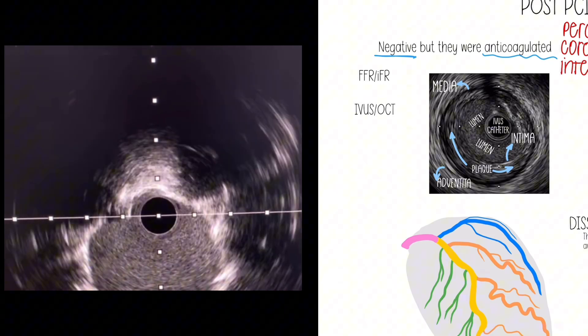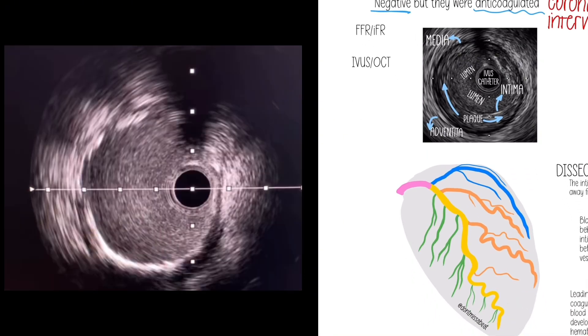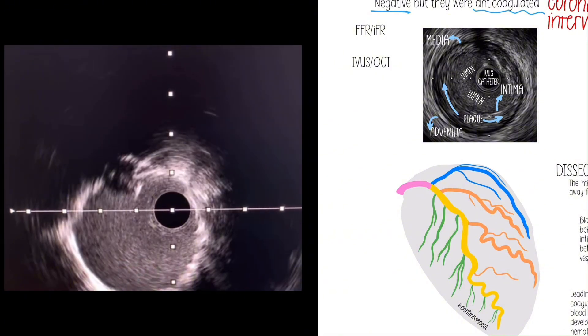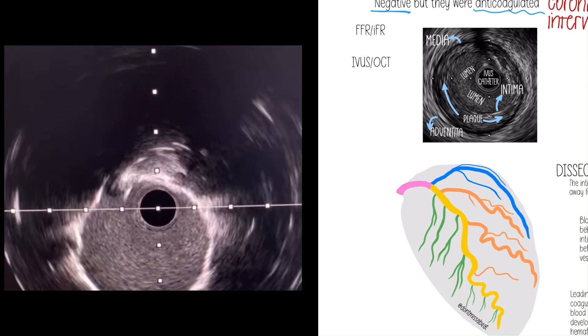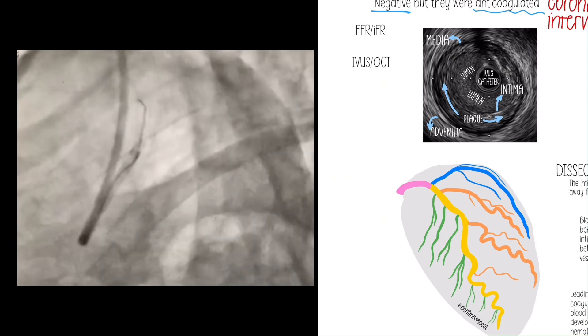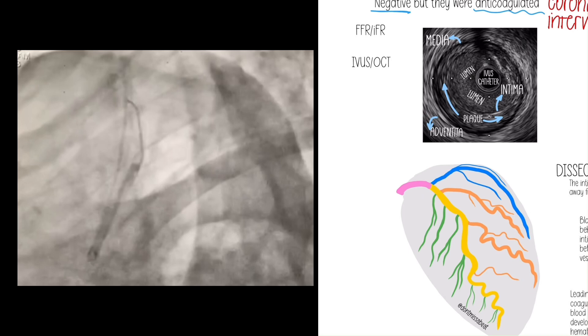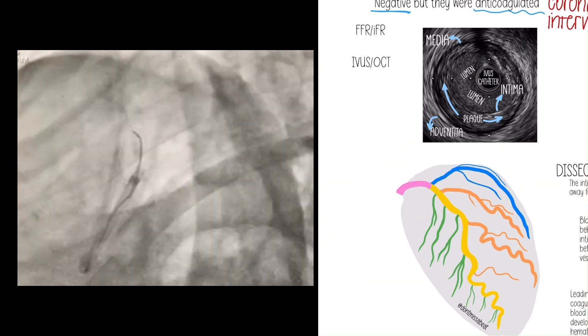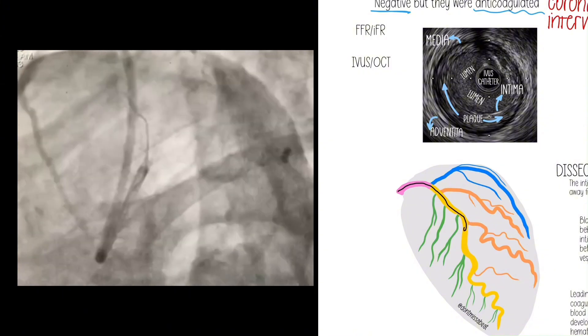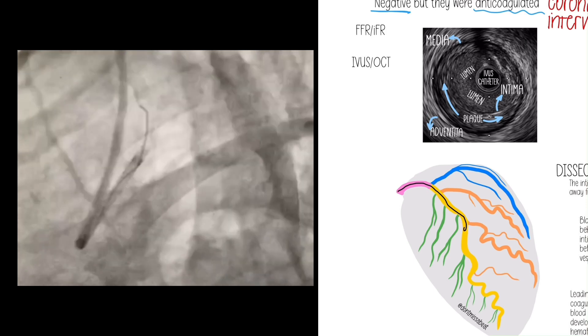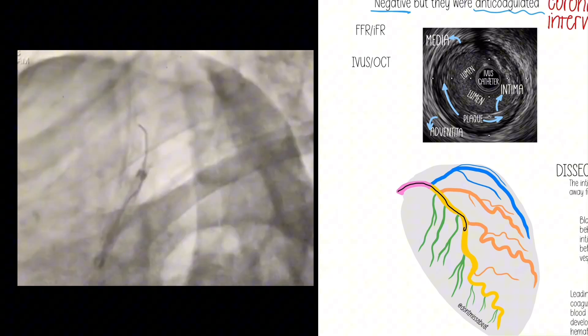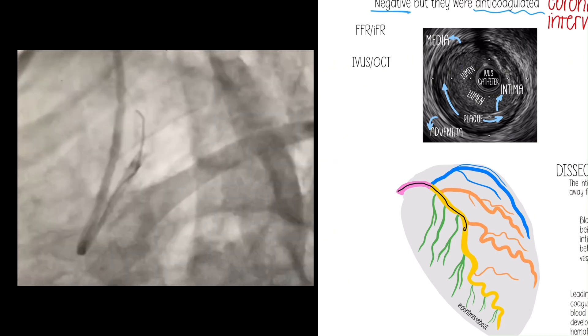There are some procedures where we anticoagulate anytime we put a wire in the coronary arteries because remember that coagulation process I talked about? The body kind of freaks out and starts aggregating platelets. Sometimes we put wires down to assess things to decide if we need to fix or not, but because we're putting a wire in the coronary artery to assess it, we have to anticoagulate. That's why your patient might have received anticoagulation. We did the assessment, decided it wasn't worth fixing, and it is deemed a negative cath, but they didn't receive a stent.